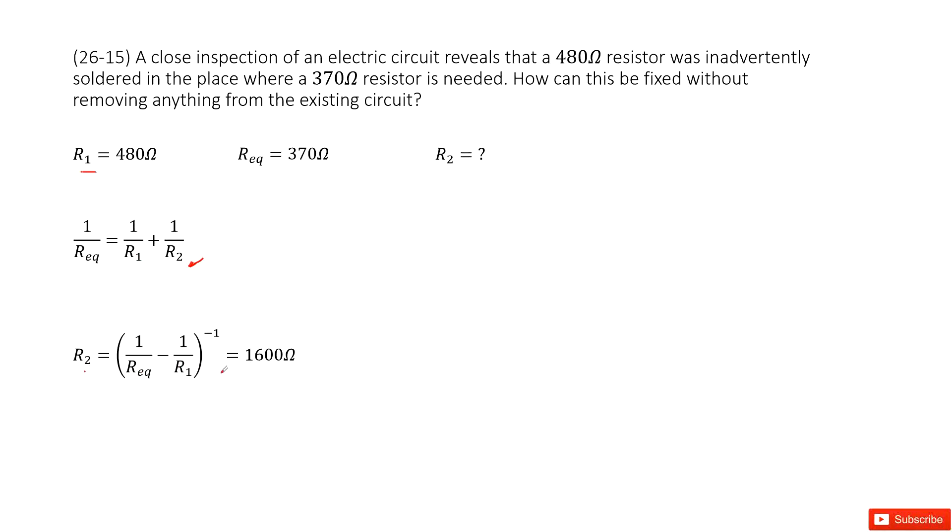Input all the given quantities. You can see R2 should be 1600Ω. That means you need to do parallel connection with R1 = 480Ω and R2 = 1600Ω. Then the equivalent resistance becomes 370Ω. Thank you.